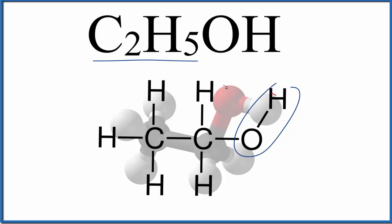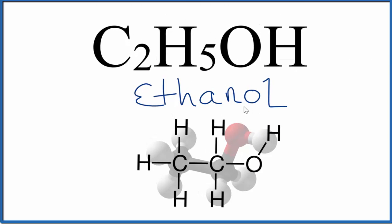So you can see the OH right here. That's the OH right here. We have our two carbons. Because we have these two carbons bonded by single bonds, the root of this would be ethane. So if we take ethane and combine it with that OL for the alcohol, we end up with ethanol as the chemical name for C2H5OH.